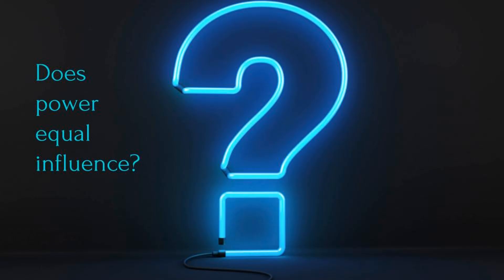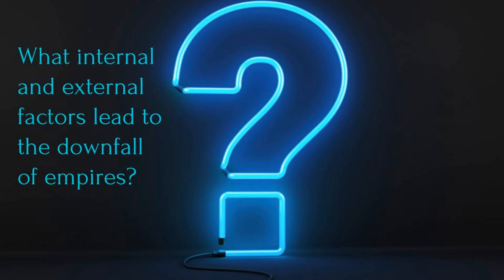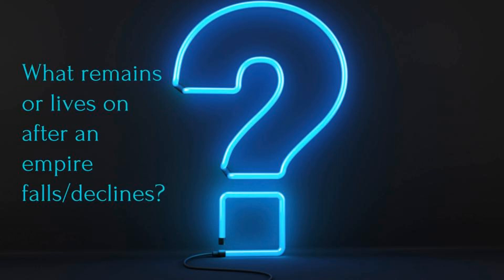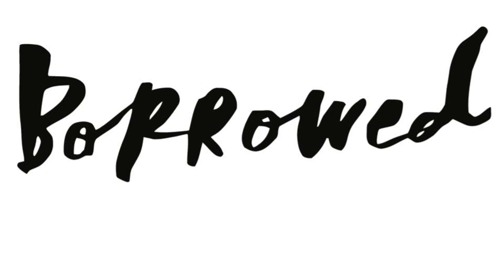We have the same essential questions as we've had for the last three podcasts. Does power equal influence? How do empires become powerful and influential? What internal and external factors lead to the downfall of empires? What remains or lives on after an empire falls or declines? And finally, what is the primary reason for the fall of Rome? The first chunk of this lesson is entitled 'The Impact of Roman Culture,' found on pages 67 through 68. The question you should be thinking about: how did Roman culture influence later societies, even like our own?